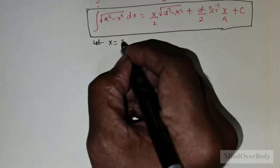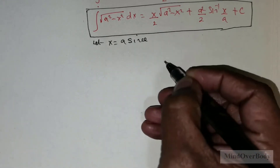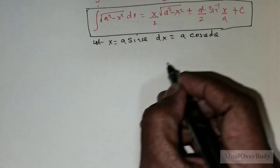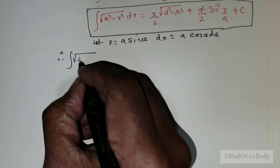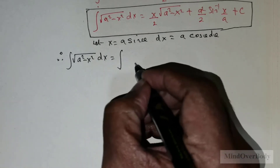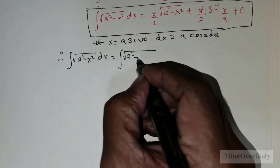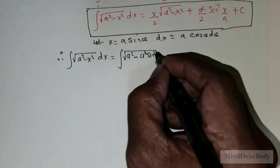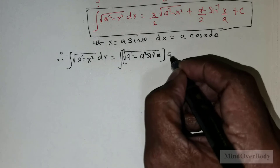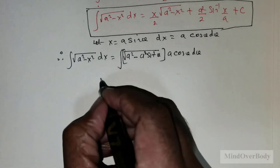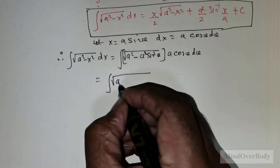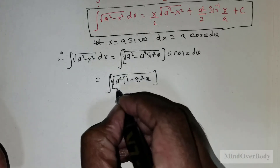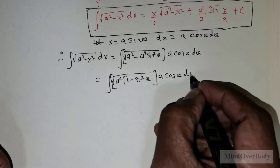I'm going to show you how to obtain this formula using the substitution x = a sinθ. Differentiating gives dx = a cosθ dθ. Therefore, ∫√(a² - x²) dx = ∫√(a² - a² sin²θ) times a cosθ dθ. This can be rewritten as ∫√(a²(1 - sin²θ)) times a cosθ dθ, where 1 - sin²θ = cos²θ.